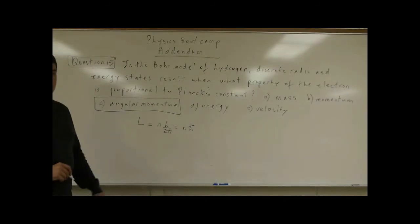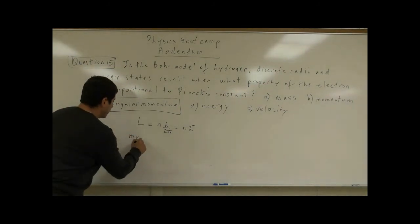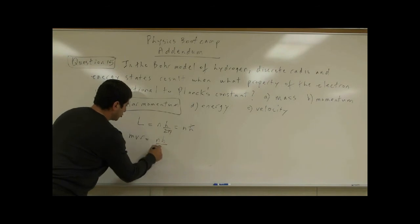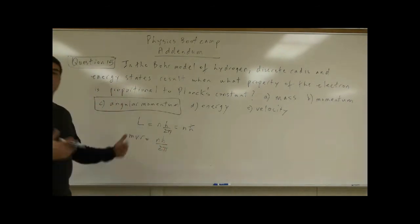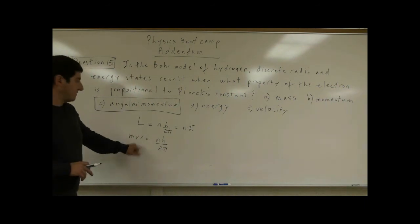This was his proposal. Angular momentum of an orbiting electron can be written as mvr equals n h over 2π. From this, we can start calculating what are the allowed discrete orbits of the electron.